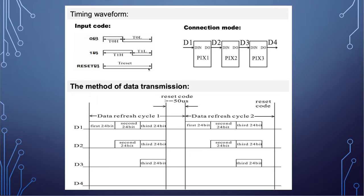We don't have to worry about any of this for two reasons. The first is that we're going to use FastLED. The second is that we're using an ESP32, which has special pins that automatically generate square pulse waveforms based on a buffer. So even FastLED has it fairly easy behind the scenes — easy for the chip to do and easy for you to use.